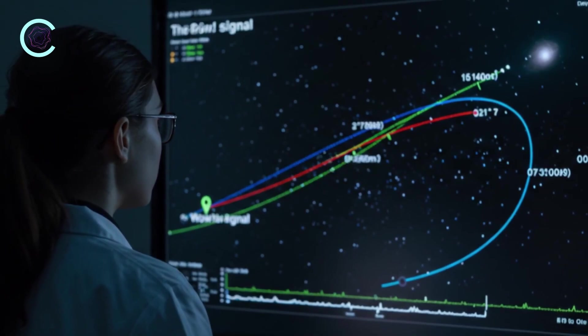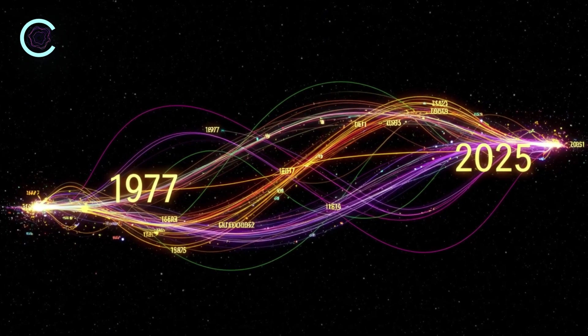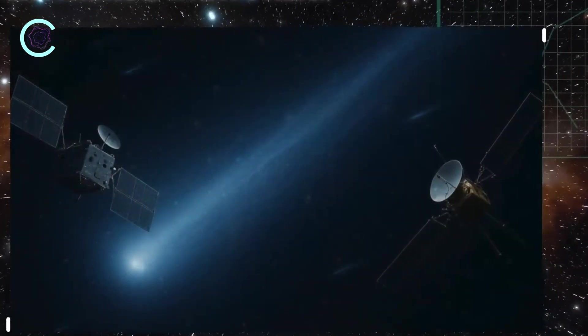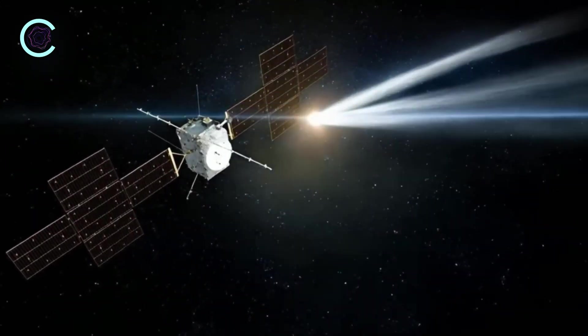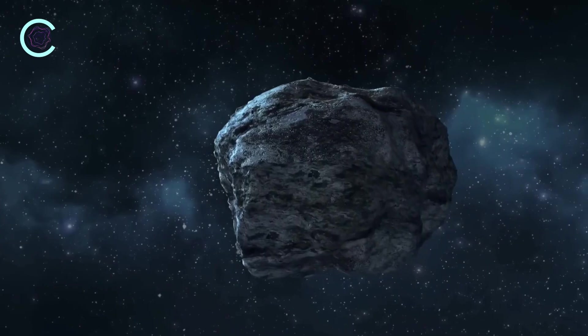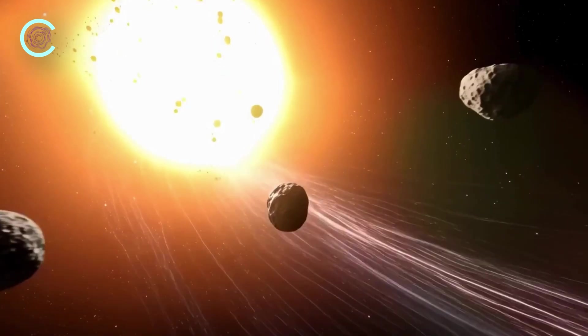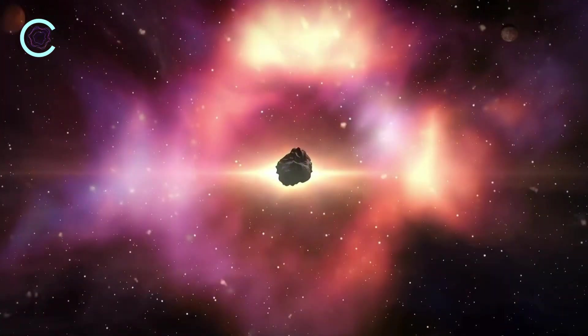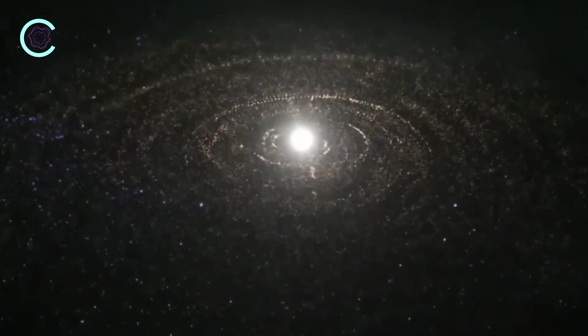Fast forward to today. When astronomers traced the path of 3I Atlas backward, they found something striking. Its origin appears to line up with the same general region of space where the WOW signal came from. And more intriguingly, in the year 1977, 3I Atlas would have been entering the outer edge of our solar system, right around the distance where a transmission could feasibly reach us without being drowned out by solar noise. Does this mean the WOW signal came from 3I Atlas? There is no evidence that proves that. But there is equally no evidence disproving it, and that's what makes this object so unnerving.